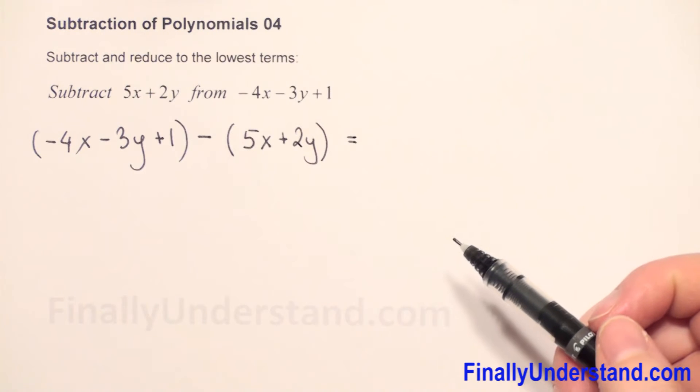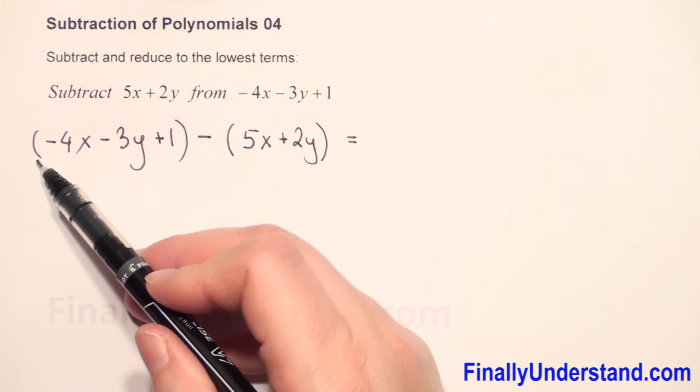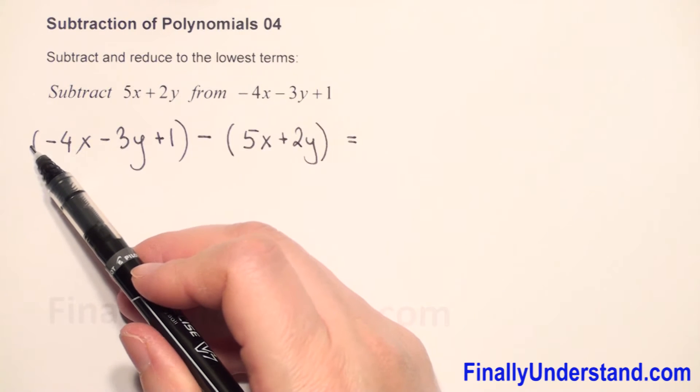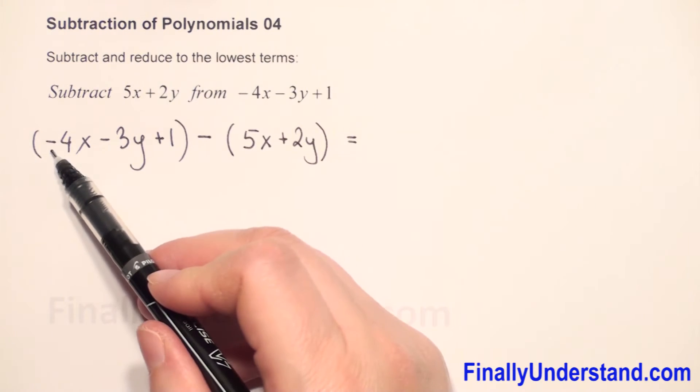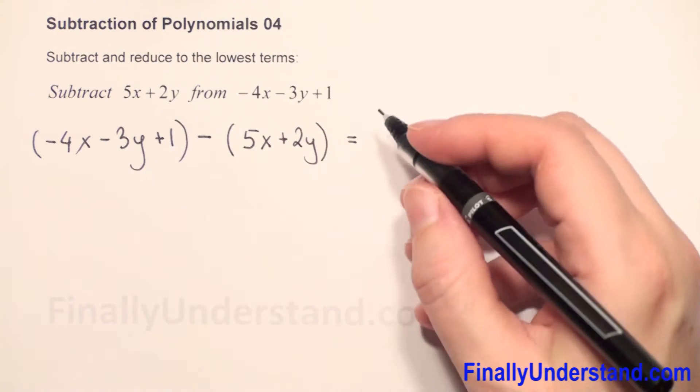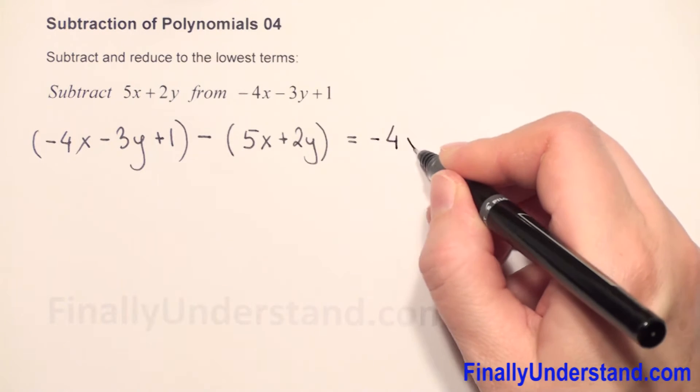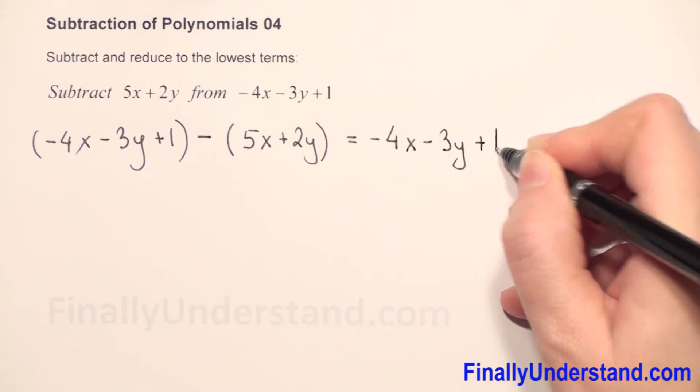Next we have to remove the parentheses. Before this first parenthesis we don't have any sign, which means a positive sign is here, so we just copy everything we have in parentheses: negative 4x minus 3y plus 1.